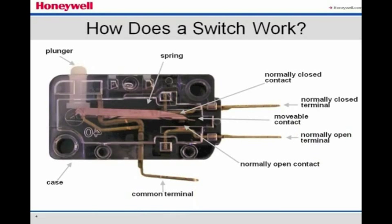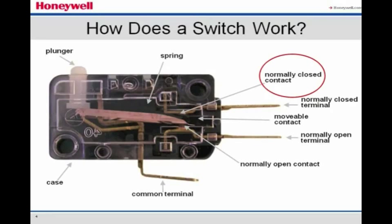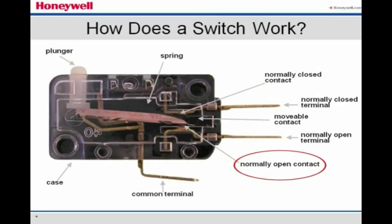As the plunger is depressed, it reaches the operating point. The distance between the free position and the operating point is called the pre-travel. At the operating point, without further movement of the plunger, the common contact accelerates away from the normally closed contact. Within a few milliseconds, the common contact strikes, bounces, and comes to rest against the normally open contact.